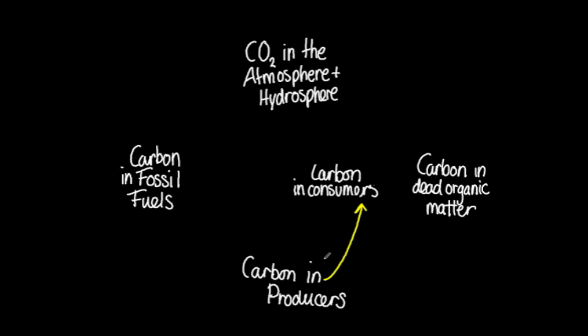Now we can add to our diagram the ways in which carbon is transferred. First by feeding — this transfers carbon between producers and consumers and also between consumers themselves.